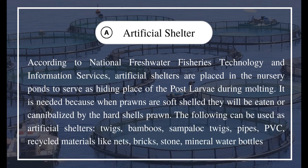Artificial shelters are needed because when prawns are soft-shelled, they will be eaten or cannibalized by hard-shelled prawns. The following can be used as artificial shelters: twigs, bamboo, sample locks, pipes, PVC, and recycled materials like nets, bricks, stones, and mineral water bottles.